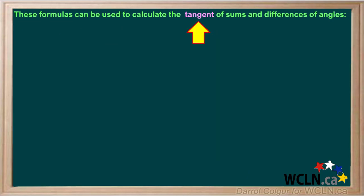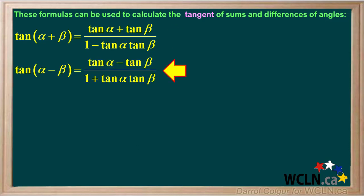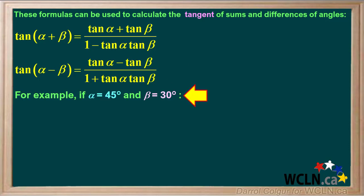The following formulas can be used to calculate the tangent of sums and differences of angles. The tangent of (alpha + beta) equals tangent alpha plus tangent beta, divided by 1 minus tangent alpha tangent beta. And the tangent of (alpha - beta) equals tangent alpha minus tangent beta, divided by 1 plus tangent alpha tangent beta.